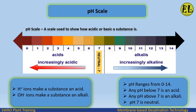The pH scale is a scale used to show how acidic or basic a substance is. pH ranges from 0 to 14. Any pH below 7 is an acid — pH range 7 to 0 is increasingly acidic. Any pH above 7 is an alkali — pH range 7 to 14 is increasingly alkaline. pH 7 is neutral. H⁺ ions make a substance an acid; OH⁻ ions make a substance an alkali.